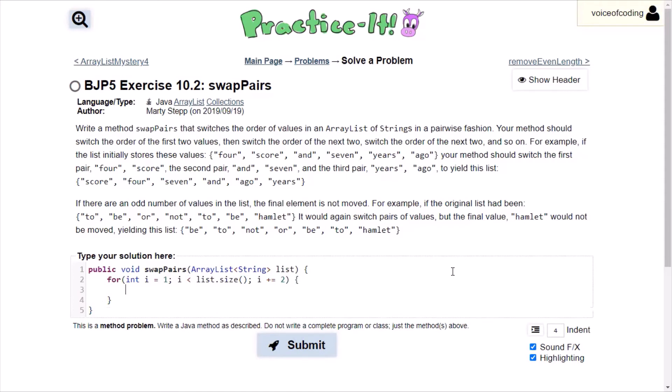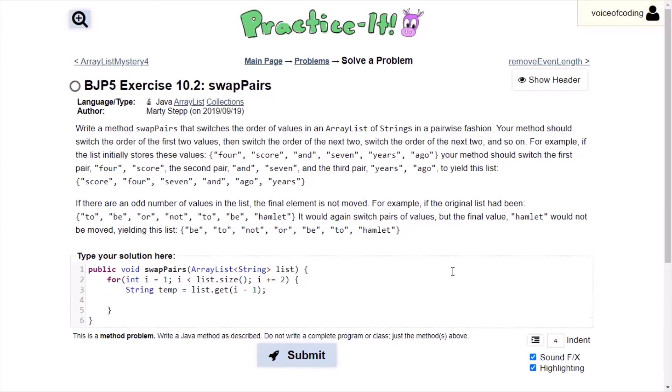Now we're going to be using a temporary variable. We'll just call this temp and then we'll be saying this equal to list.get i minus 1 because we start at 1. So we need to get the first element, which is 0.